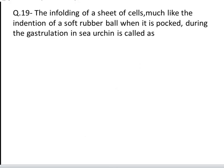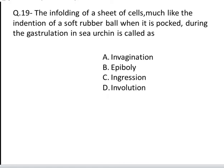The next question is: the infolding of a sheet of cells, much like the indentation of a soft rubber ball when it is poked, during gastrulation in sea urchin, is called. These are your four options: A. Invagination, B. Epiboly, C. Ingression, D. Involution. Yes, the correct answer is A, Invagination.